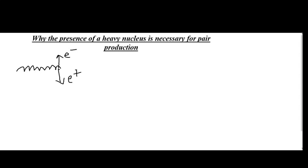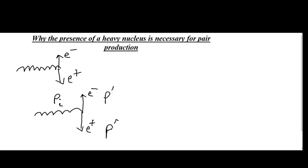So when a fast moving photon with momentum Pi is converted into an electron with momentum P prime and a positron with momentum P double prime, the total initial momentum is Pi and the total final momentum is P prime plus P double prime.